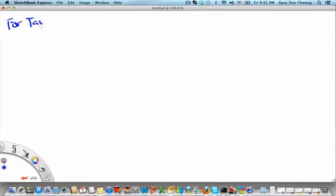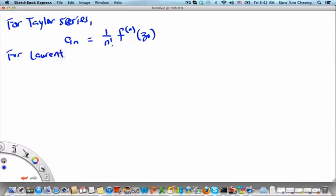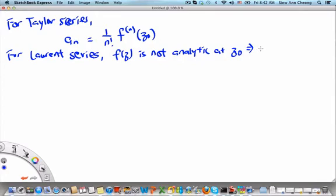we understand that an equals 1/n! times f^(n)(z0), the nth derivative of f evaluated at z0. Now, what about for the Laurent Series Expansion? Because the function is not analytic at z0, the derivatives do not exist.